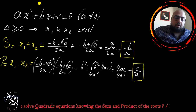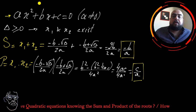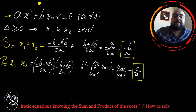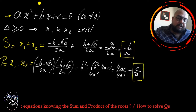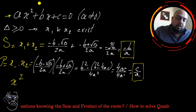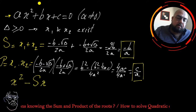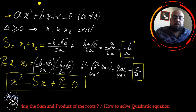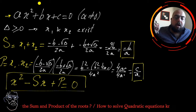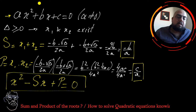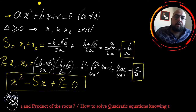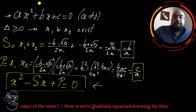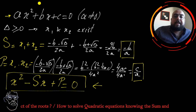If I divide my initial equation ax squared plus bx plus c by a, I obtain an equation with S and P. It will be x squared minus sx plus p, equal to zero. So dividing by a gives x squared plus b over a times x plus c over a equals zero. Since b over a is minus s and c over a is p, this equation is a quadratic form where you have s and p — the sum and the product of the roots.